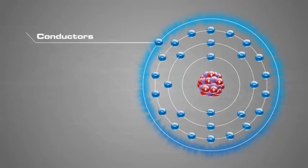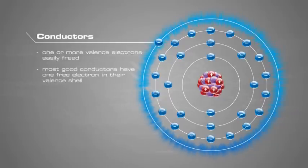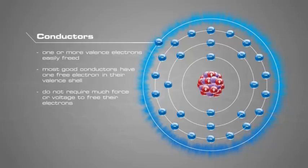It's the valence shell electrons of any element that are crucial for current flow. A material is an electrical conductor when one or more of its valence electrons can be easily freed. Most good conductors have one free electron in their valence shells. Good conductors do not require much force or voltage to free their electrons, thus propagating the flow of energy.